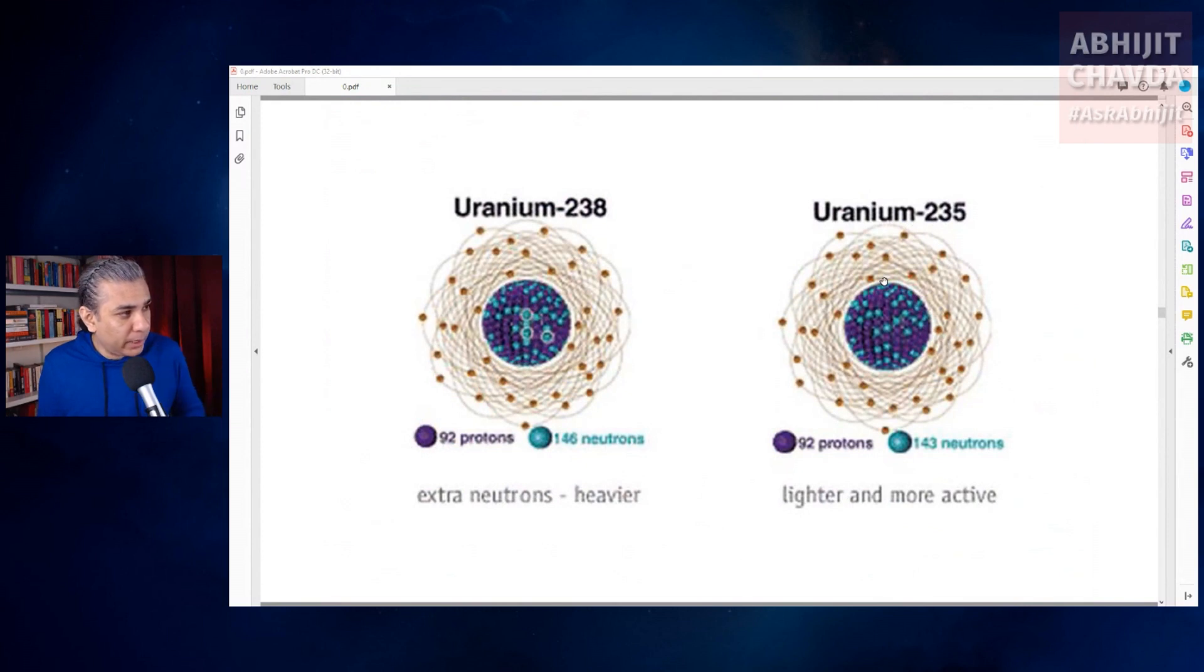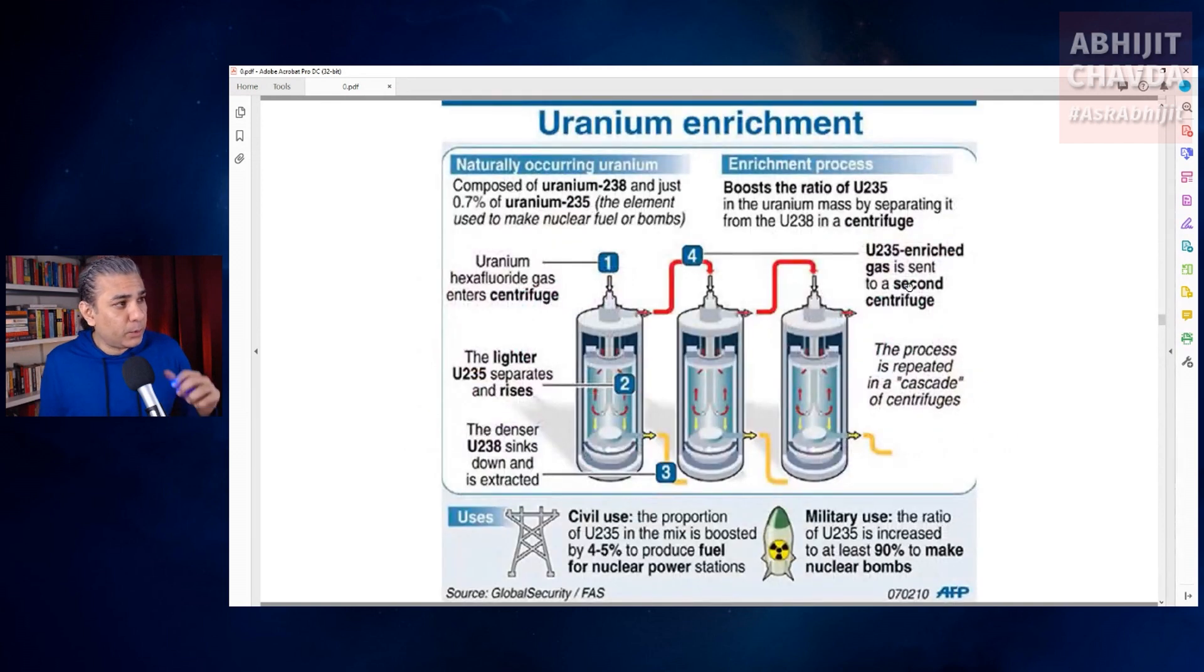The most commonly available isotope of uranium is called uranium-238, and the much rarer uranium-235 is suitable for nuclear power. Uranium has to be enriched so that it contains at least 3% uranium-235, which is good enough for nuclear power plants.